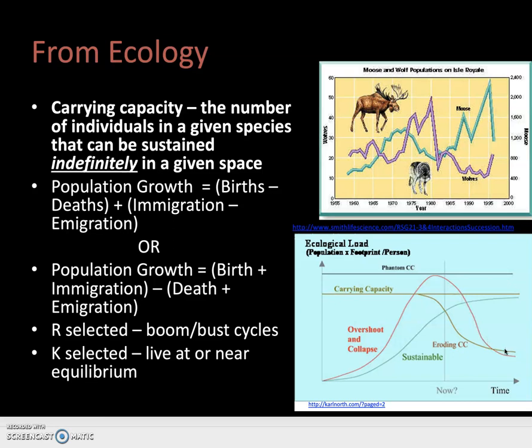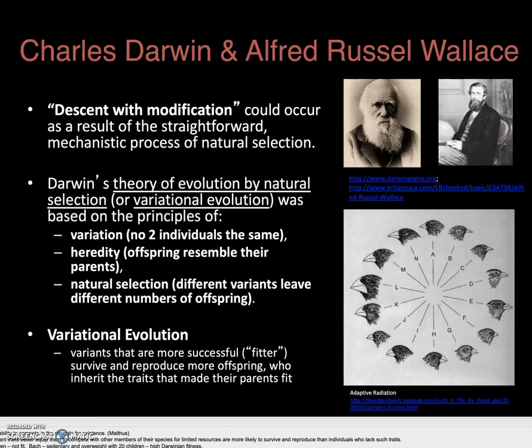This is what Thomas Malthus was thinking about in writing about human populations as well. As a species we would overrun the resources available to us, experiencing a dieback through a number of different things including war — basically fighting over scarce resources — pestilence, disease, overall shortfall of resources, famine, and the political determinants that go into that.